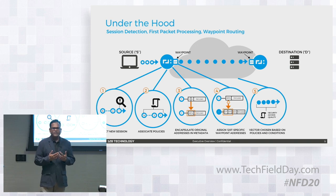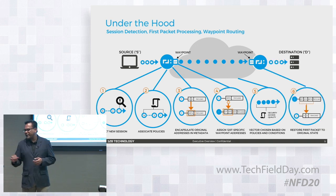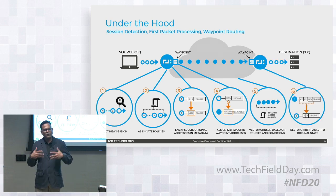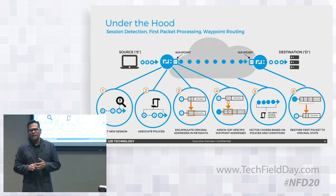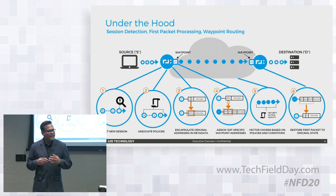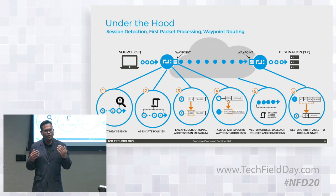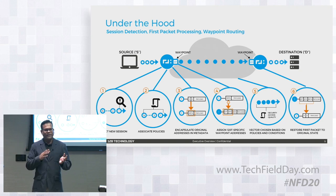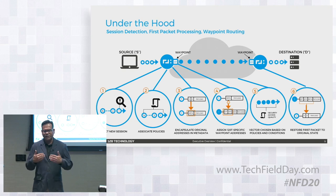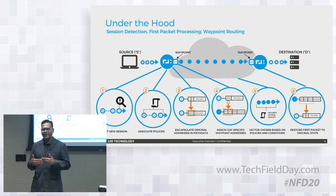Once the receiving router gets this packet, it removes the intelligent cookie, uses it to NAT the packet back, and sends the packets to the application. The advantage: we can go through network boundaries and any translations without affecting the application. If there are failovers or we go through another path, we can recreate the session instantaneously, without any setup time or delays.